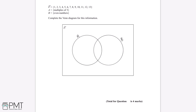We can start off with 1. 1 is an odd number and is not a multiple of 3, so 1 needs to be placed outside the circles. 2 is an even number but is not a multiple of 3, so we'll place it in circle B. 3 is a multiple of 3 but is an odd number, so we can place this in A.